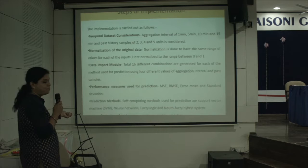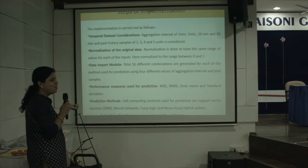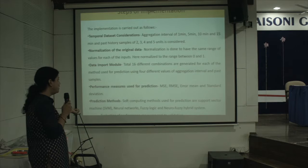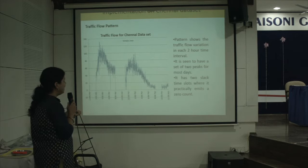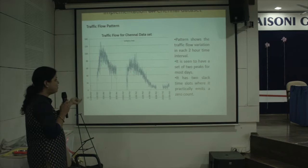In the implementation, normalization is applied to ensure the same range of values for each input. A total of 16 different combinations are generated for each method, after which performance measures are evaluated. The four prediction methods used are LSSVM, neural network, fuzzy logic, and neuro-fuzzy hybrid system. The traffic flow pattern for the Chennai (GenA) dataset shows a 2-hour time interval with two peaks for most of the day and two slack time slots where the count is practically zero.